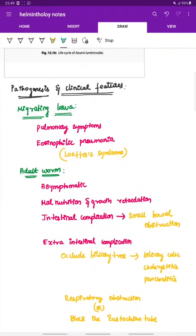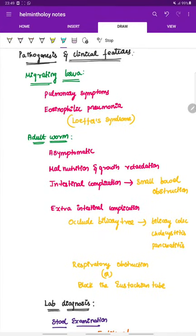Next is the pathogenesis and clinical features. First, due to the migrating larvae causes pulmonary symptoms and eosinophilic pneumonia called Loeffler syndrome.